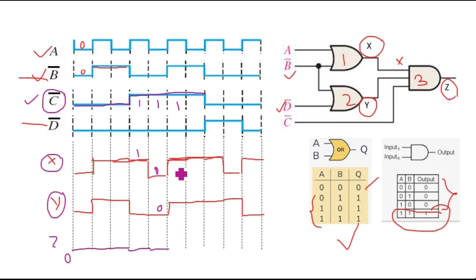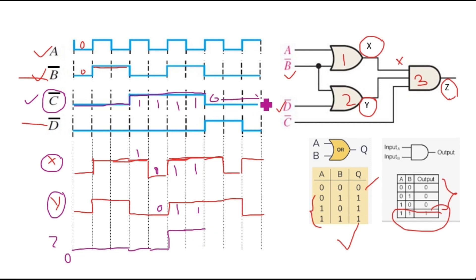When c̄ is 1, x is 1, and y is 1 — all inputs are 1 — so z becomes 1. For the next pulse, c̄ is still 1, x is 1, y is 1, so z remains 1. Then c̄ becomes 0 for the remaining duration, so directly make z 0 because if any one input is 0 the output is 0. This is how you solve multiple logic gate waveform questions. I hope you got this explanation — please like and subscribe, thank you for watching.